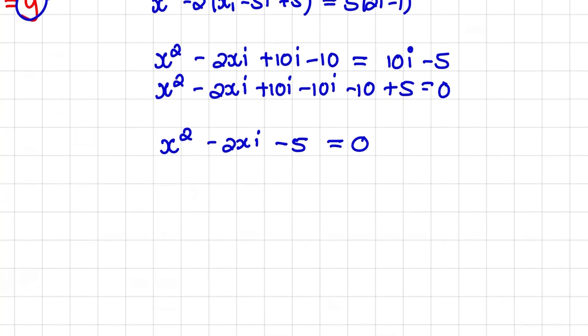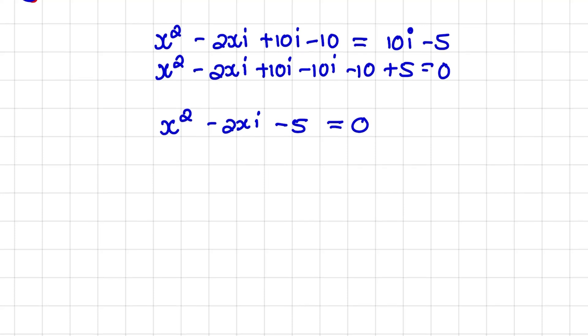Now even though this is a trinomial, we cannot factorize it because we have an imaginary number in our second term. And also, the factors of 5 will not help us to create minus 2i. So what we would rather do is use the quadratic equation.